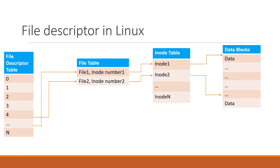What is a file descriptor in Linux? Whenever any process is created in Linux, it will maintain a file descriptor table. This table contains the file descriptor entries. Each entry in the table will uniquely identify an open file for a particular process. If any process opens a file, it will append an entry to the file descriptor table. By default, entries 0, 1, and 2 are assigned to standard input, standard output, and standard error. After that, whenever any new file is opened, the corresponding file descriptor entry will be added to the file descriptor table.